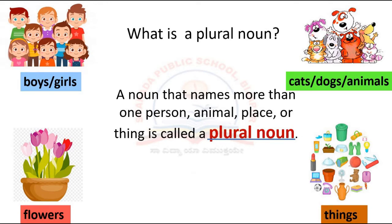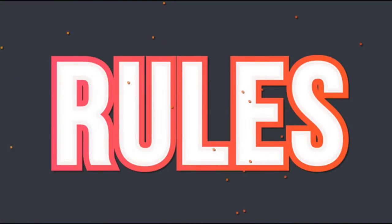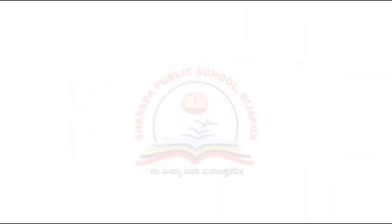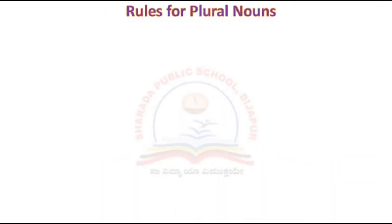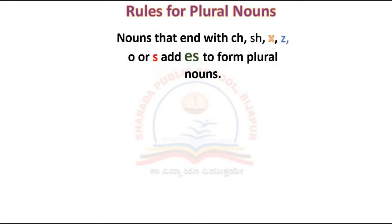So children, now we will learn some rules — rules for plural nouns. Nouns that end with ch, sh, x, z, o or s add 'es' to form plural nouns.